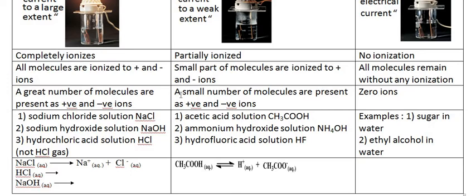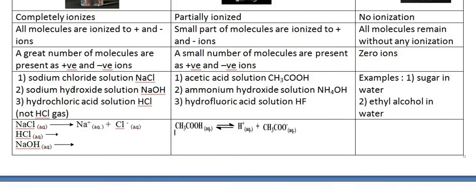For the weak electrolyte with partial ionization: a small number of molecules are present as positive and negative ions, but a greater number of molecules are present as neutral molecules. For the strong electrolyte, a great number of molecules dissociate completely, so a great number of positive and negative ions are present.